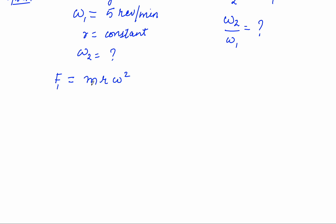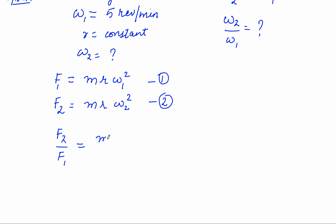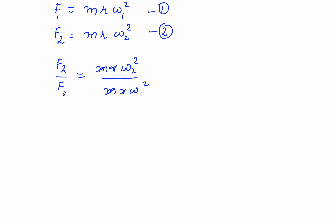The centripetal force F2 is 4 times of F1. This is given to us and is a very important piece of information. We have to find out the ratio of final speed to initial speed, that is final speed divided by initial speed. We don't have to find the final speed itself — just the ratio of final to initial speed. So let's write the formula of centripetal force.